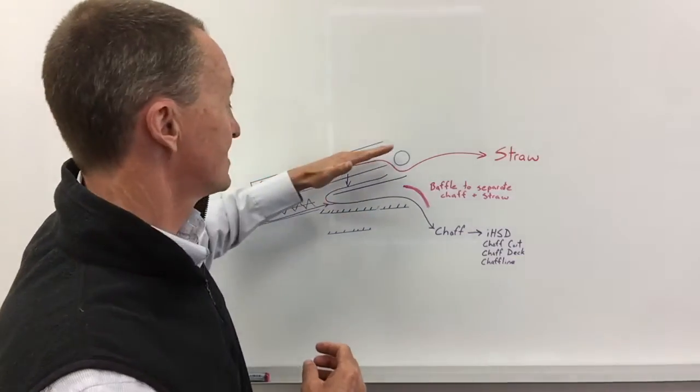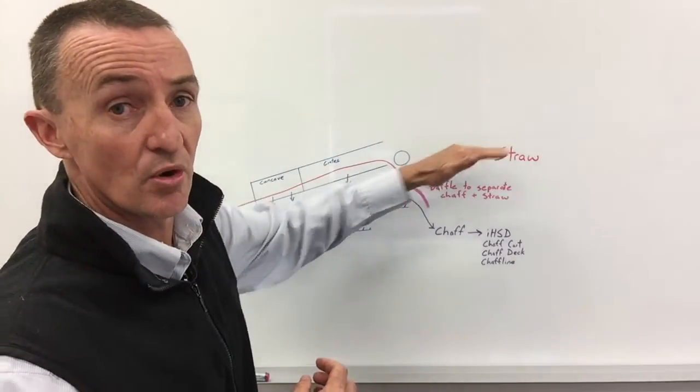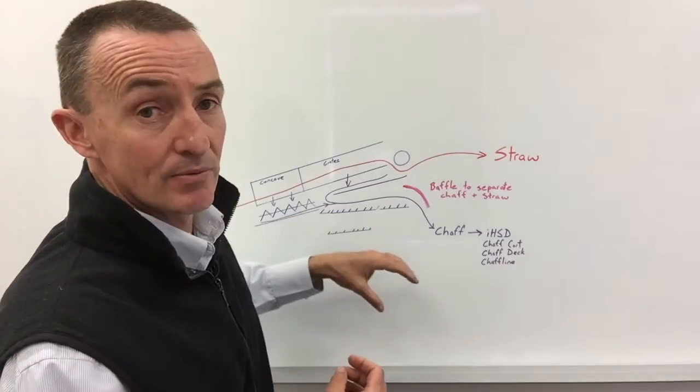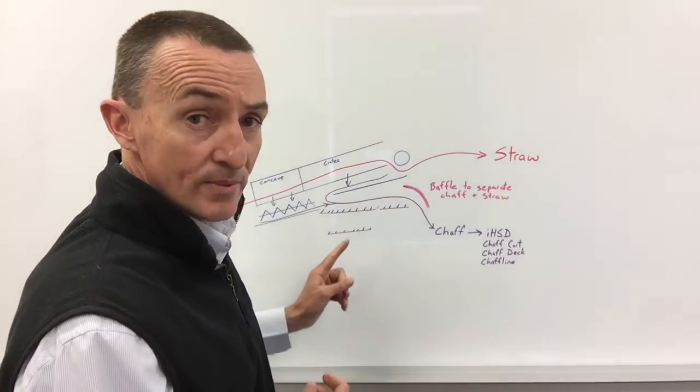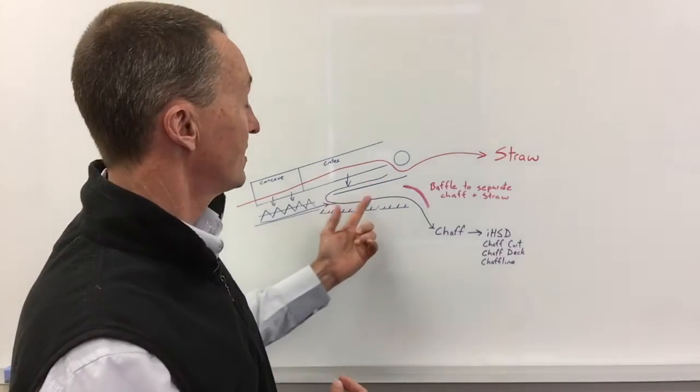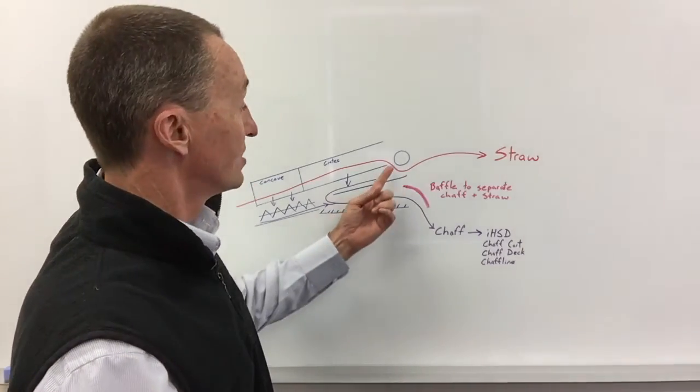Step three: we need to make sure we don't have too much wind on. If we have too much wind, it's going to blow the chaff all the way up into the straw stream and exit.